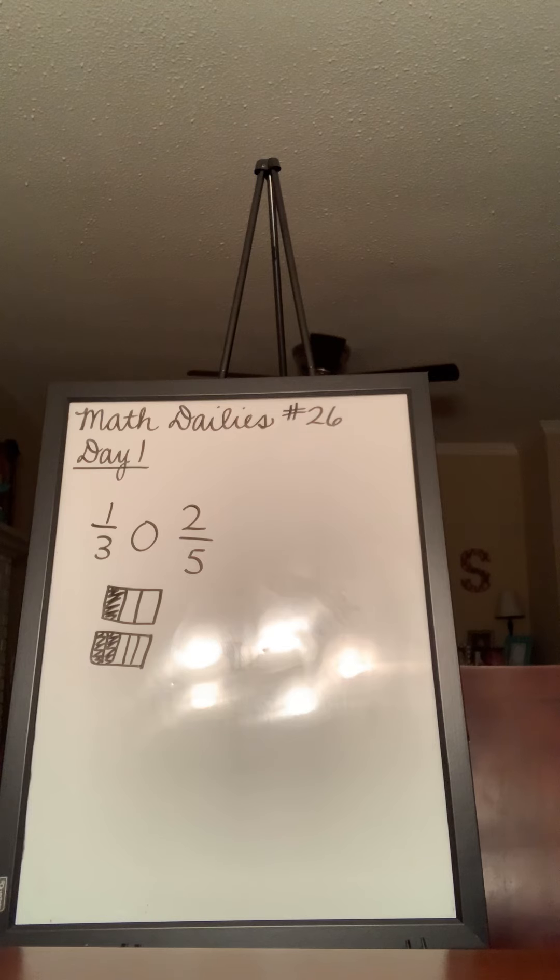So, it's 1/3 compared with 2/5. We are writing either less than, greater than, or equal to to make the statement true.